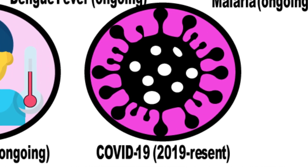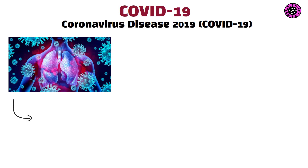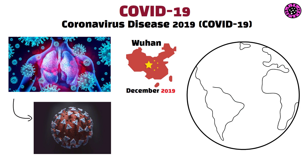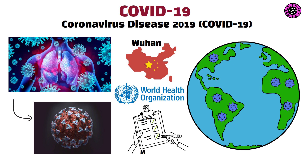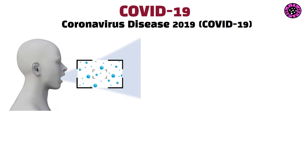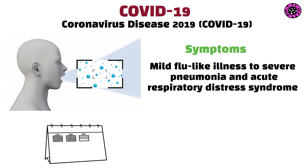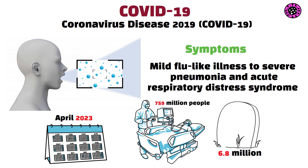COVID-19, 2019. Coronavirus disease 2019, COVID-19, is a viral respiratory illness caused by the SARS-CoV-2 coronavirus. First identified in Wuhan, China, in December 2019, COVID-19 quickly spread globally, leading to the World Health Organization declaring it a pandemic in March 2020. Transmitted through respiratory droplets and close contact, COVID-19 causes a range of symptoms, from mild flu-like illness to severe pneumonia and acute respiratory distress syndrome. As of April 2023, COVID-19 has infected over 759 million people and claimed over 6.8 million lives worldwide, making it one of the deadliest pandemics in modern history.